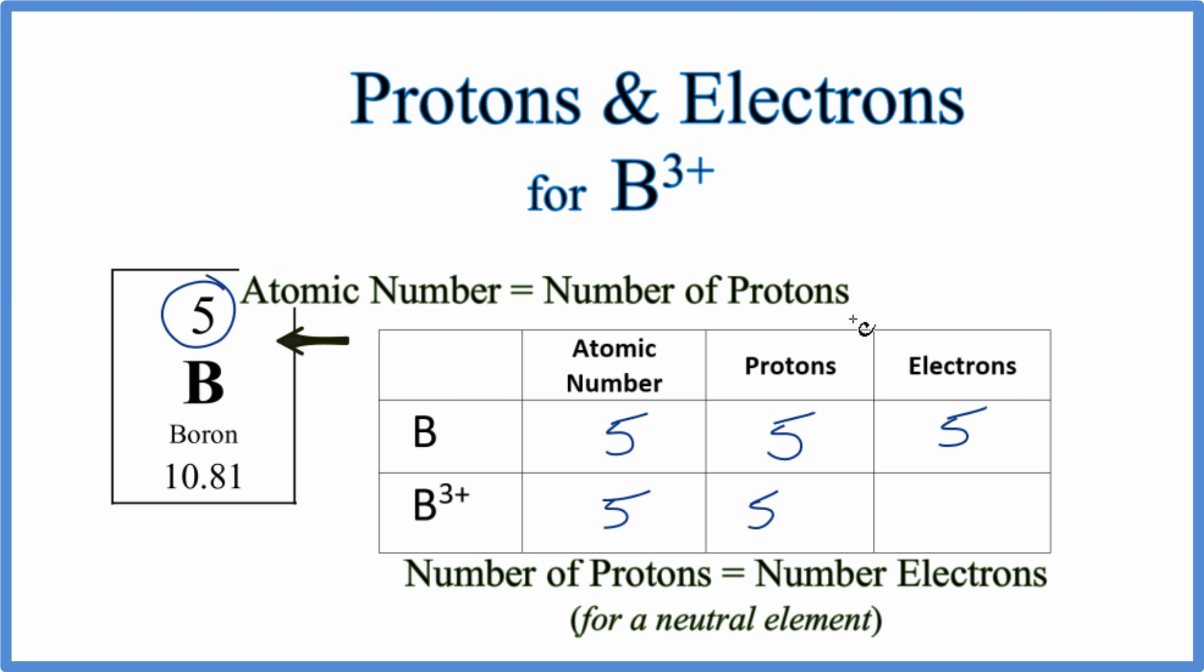For the ion, the thing that's going to be different is the number of electrons. When we have this three plus here, what that means is we've lost three negative charges. If you lose negative charges you become positive. So we've lost three electrons, three negative charges. So five minus three, that'll give us two electrons. So this boron ion only has two electrons.